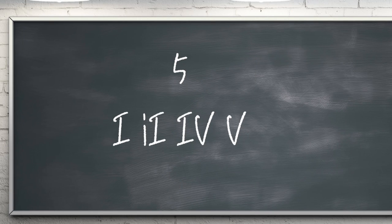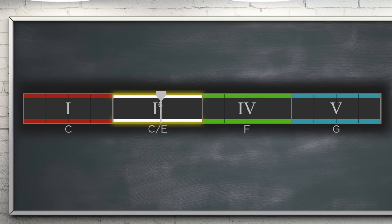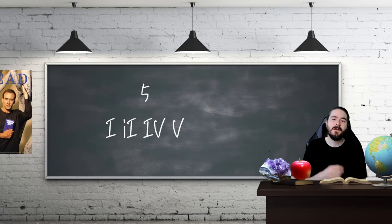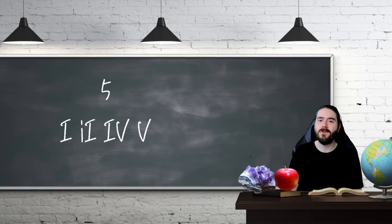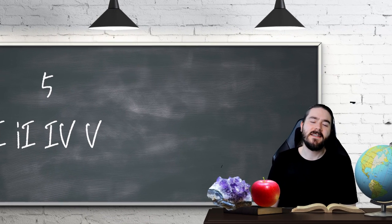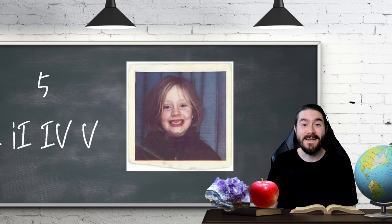Some more four-chord progressions now, starting with number 5: 1, 1st inversion 1, 4, 5. Another display of how inverted chords can transform a completely major progression. Examples include Thinking Out Loud by Ed Sheeran and When We Were Young by Adele.